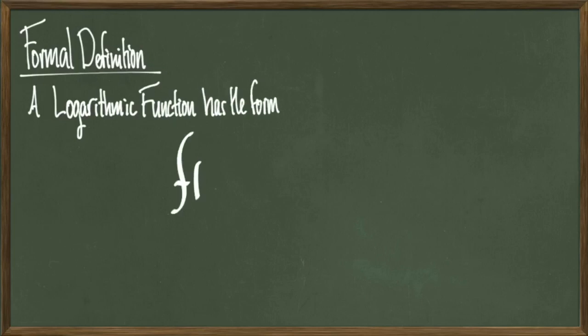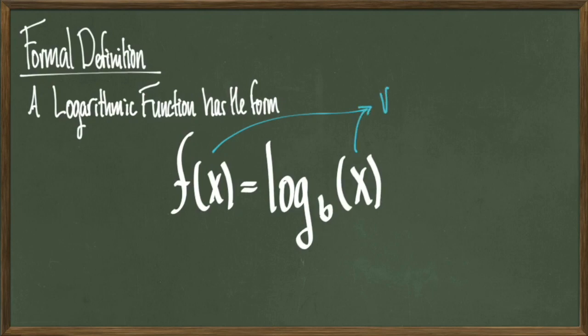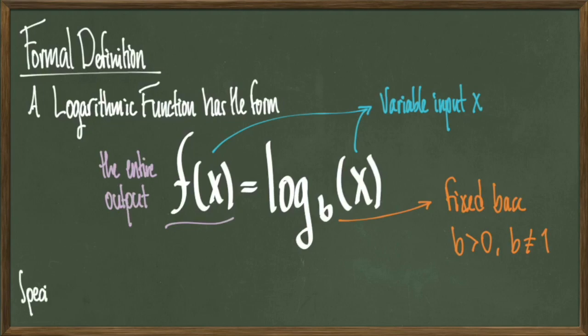Now let's jump into the formal definition of a logarithmic function. A logarithmic function has the form f(x) = log base b of x, where x is our variable input, b is our fixed base that is greater than 0, not equal to 1, and then f(x) will be the entire output.